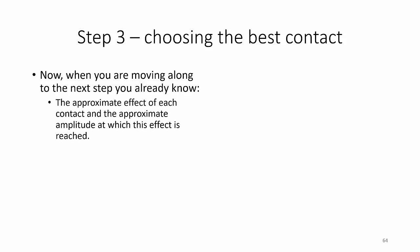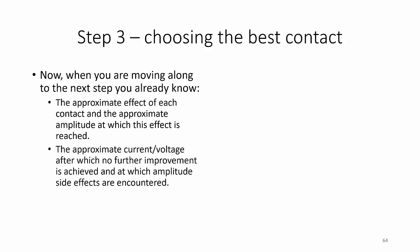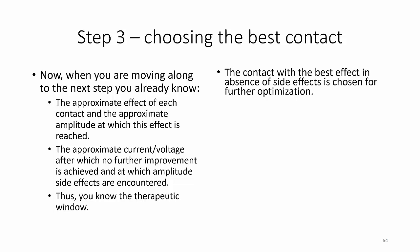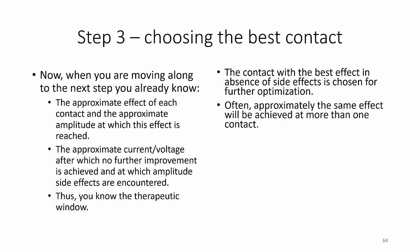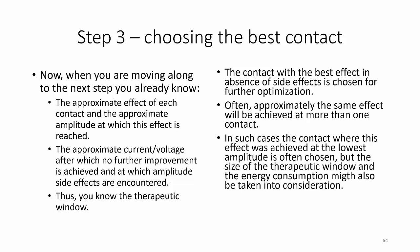In the third step we will choose the best contact. At this stage we already know the approximate effect of each contact and the approximate amplitude at which this effect is reached, also the approximate current after which no further improvement is achieved and at which amplitude side effects are encountered — thus we know the therapeutic window. We will now choose the contact with the best effect in the absence of side effects for further optimization. Often approximately the same effect will be achieved at more than one contact; in such cases, the contact where this effect was achieved at the lowest amplitude is often chosen, but the size of the therapeutic window and the energy consumption may also be taken into consideration.